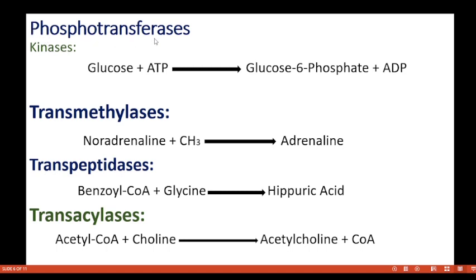The next subclass is phosphotransferases, and the sub-subclass is kinases. Glucose plus ATP is converted to glucose-6-phosphate and ADP. Transmethylases catalyze the transfer of a methyl group — for example, noradrenaline plus methyl group is converted to adrenaline. Transpeptidases: benzoyl-CoA plus glycine is converted to hippuric acid. Transacylases convert acetyl-CoA plus choline to acetylcholine plus CoA.